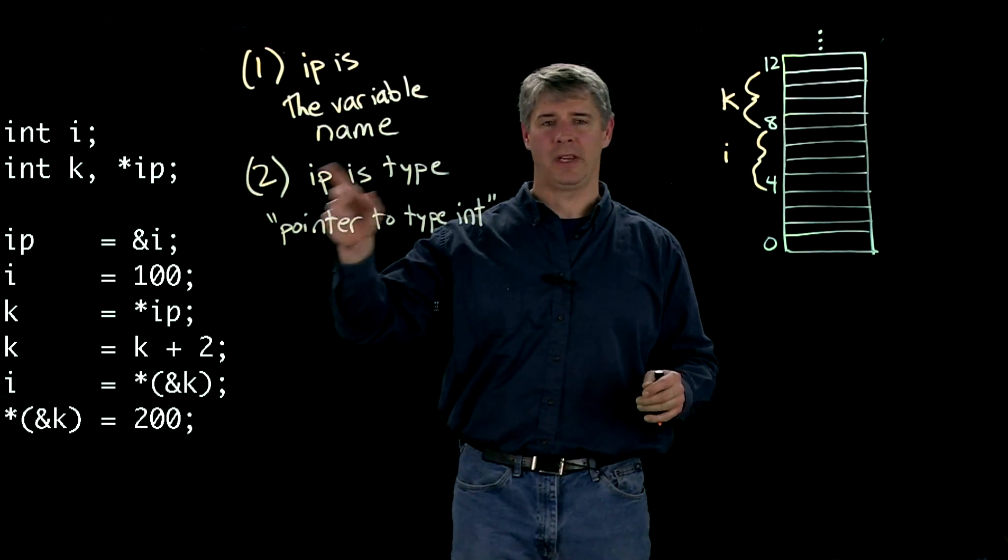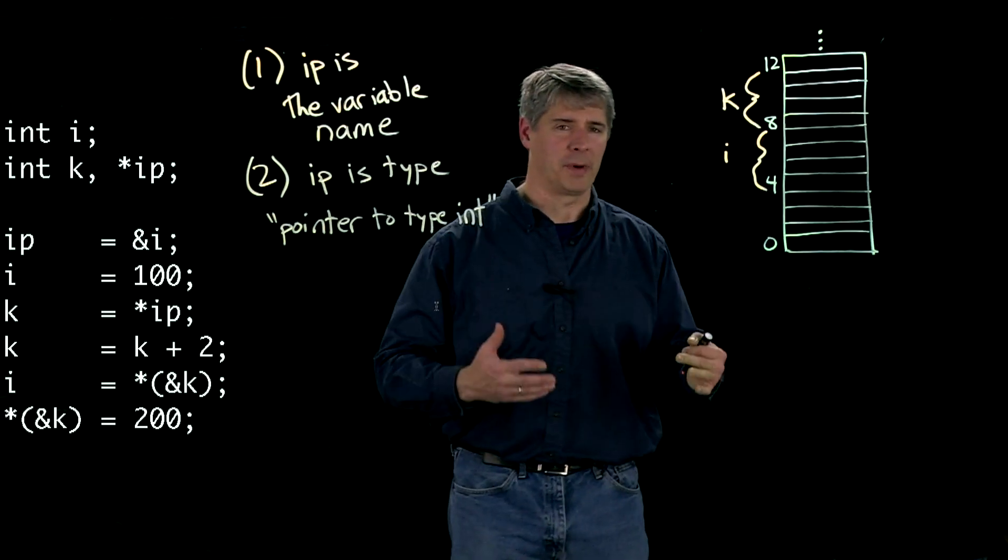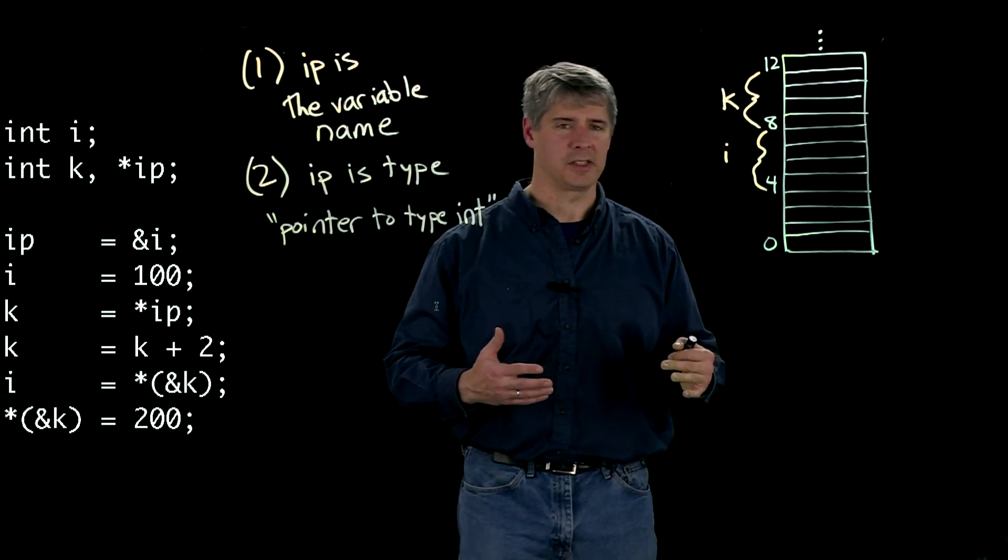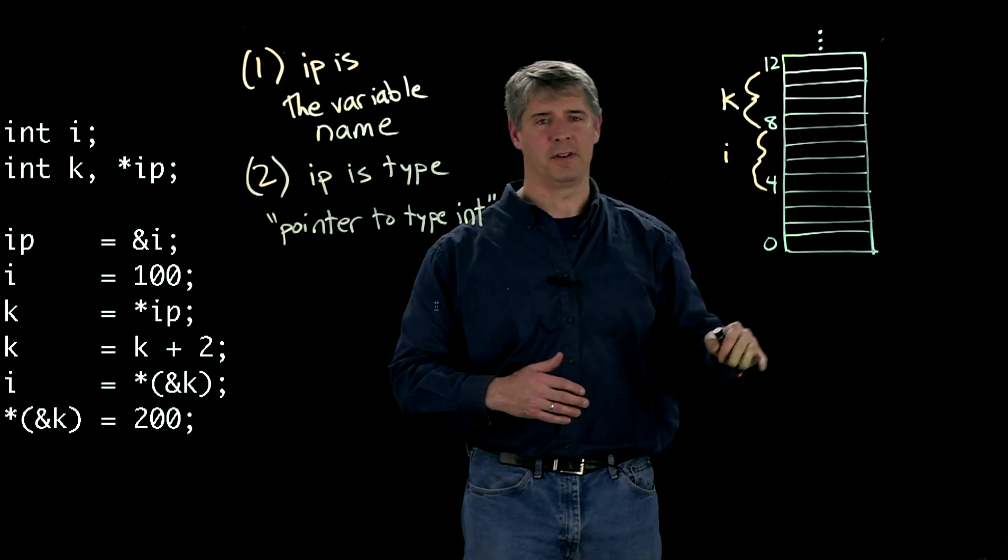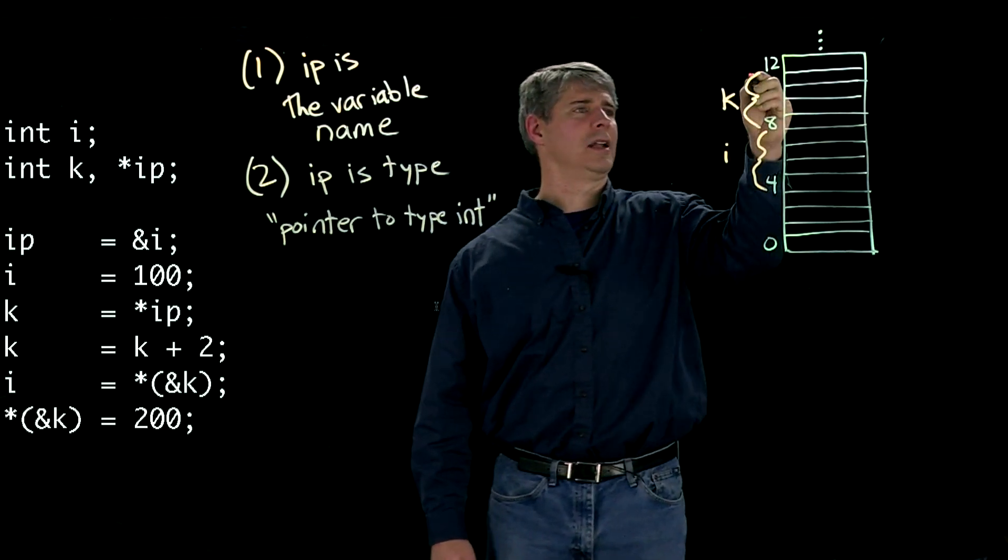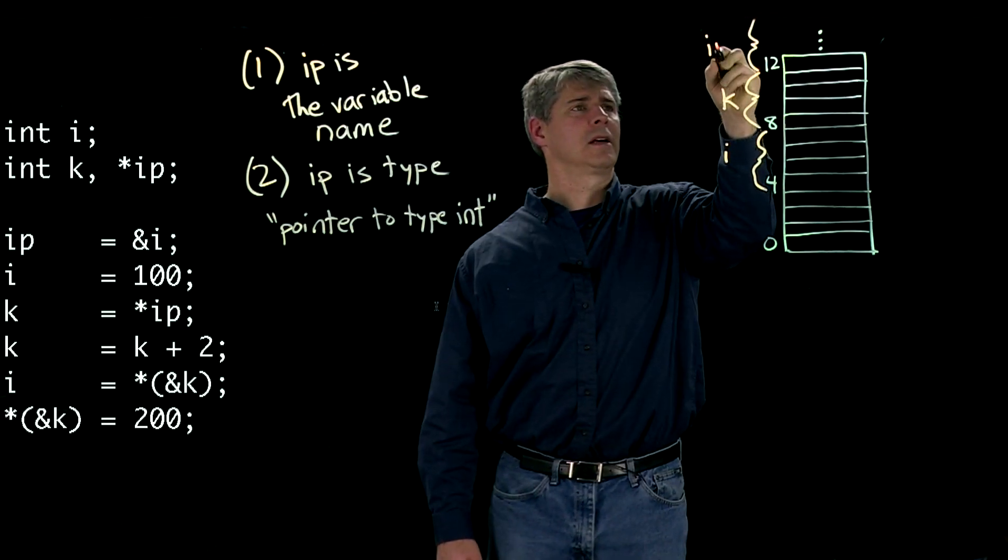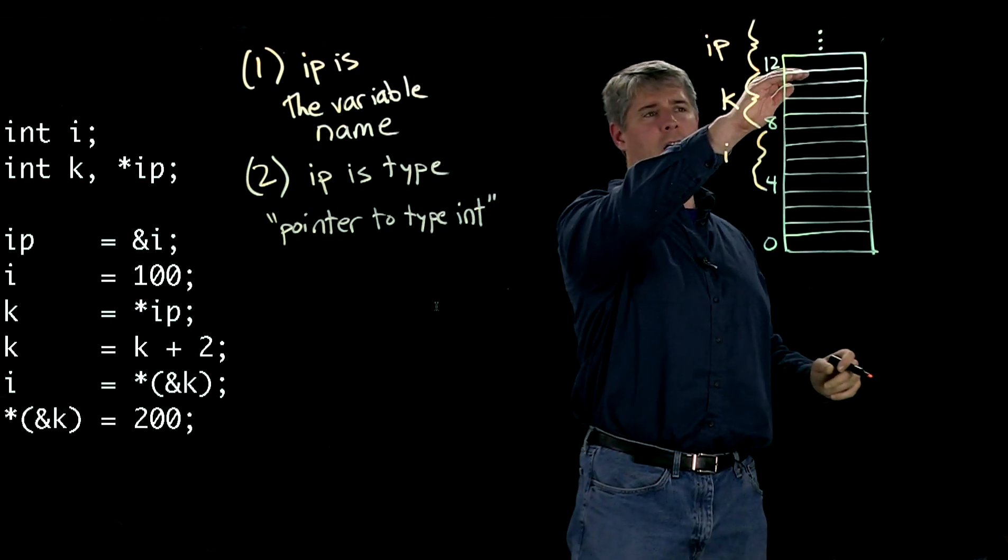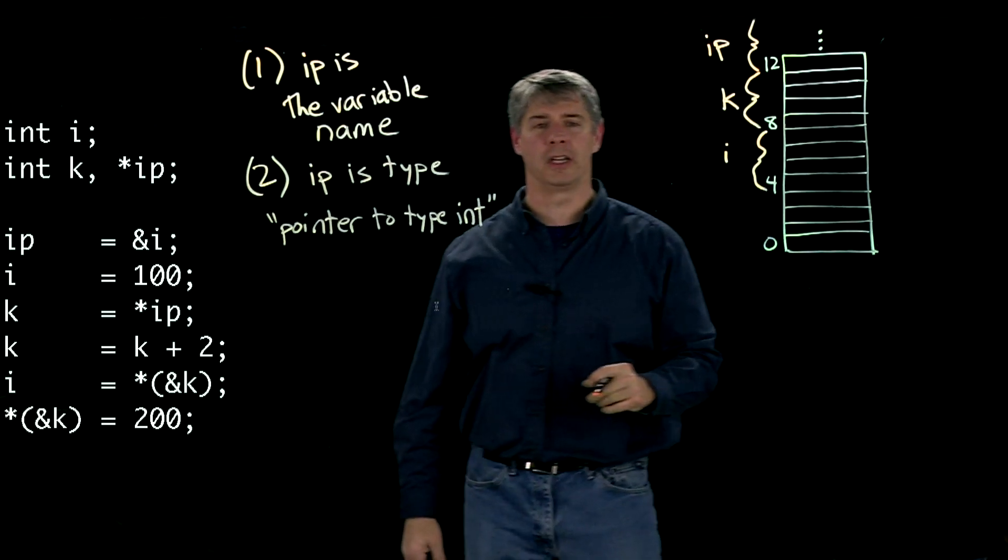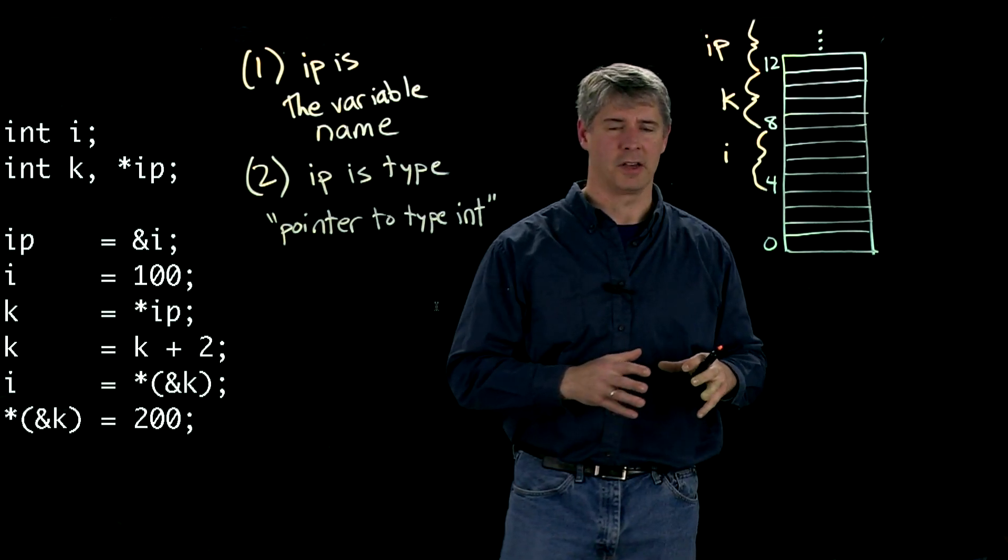So this is telling us that ip is going to hold an address. So I don't know how many bytes we need to hold that address. It depends on how many bytes you have in memory, how long the address has to be. So I'm going to not worry about that. And I'm just going to say that ip is allocated from byte 12 up to whatever it needs in memory. And those bytes are going to hold an address of an integer.